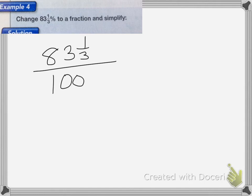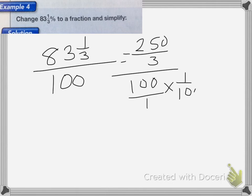I need to change both numerator and denominator into improper fractions. So that equals 250 thirds over 100 over 1. Multiply the numerator and denominator by 1 over 100. And that equals 250 over 300.